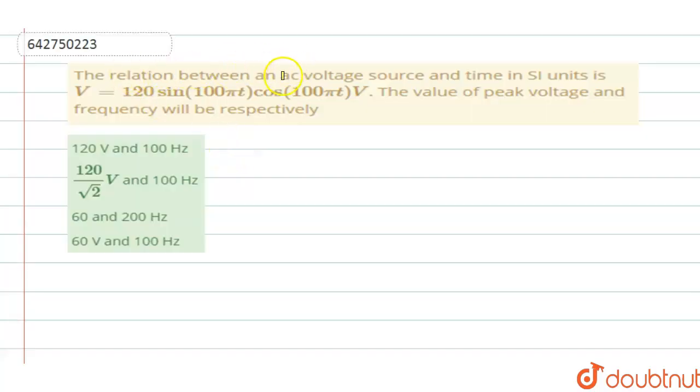The relation between an AC voltage source and time in SI units is V equals 120 sine of 100πT into cos of 100πT. The value of peak voltage and frequency will be respectively.